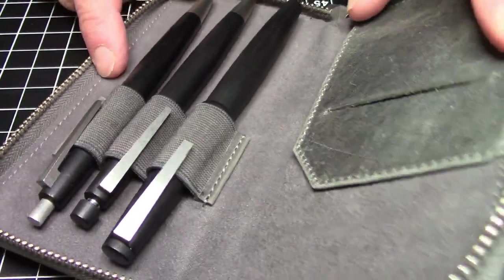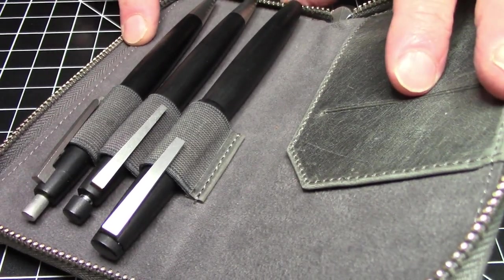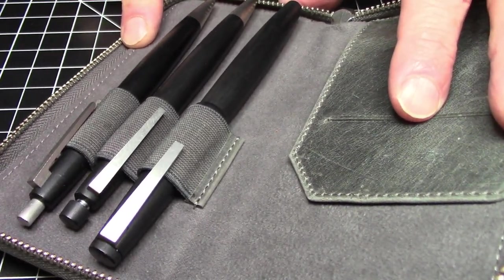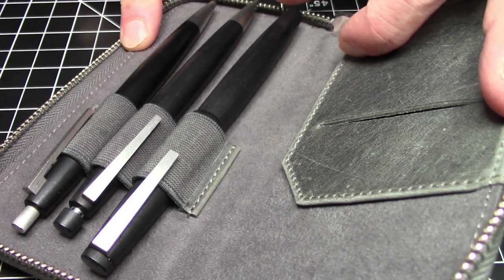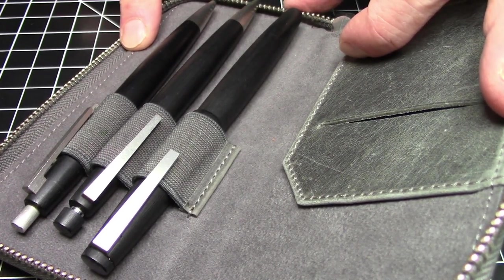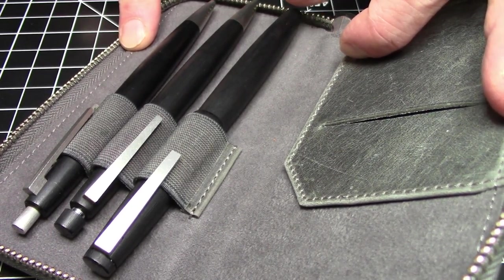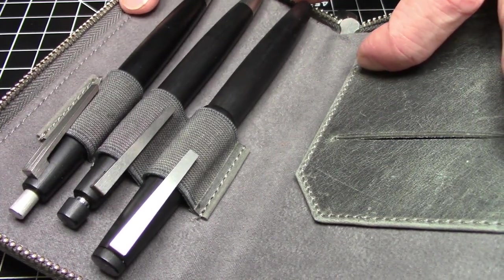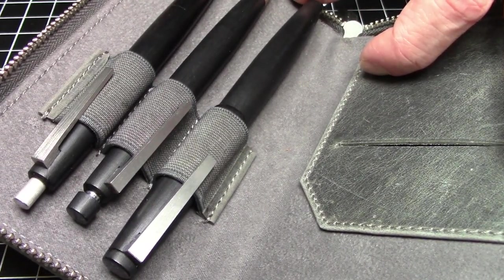So that's what we have in here and what we have here is the set of Lamy from Lamy 2000. It's the set of the fountain pen, the ballpoint and the pencil. There actually is I believe a fourth component to the set. I believe they also make a rollerball which I do not have.